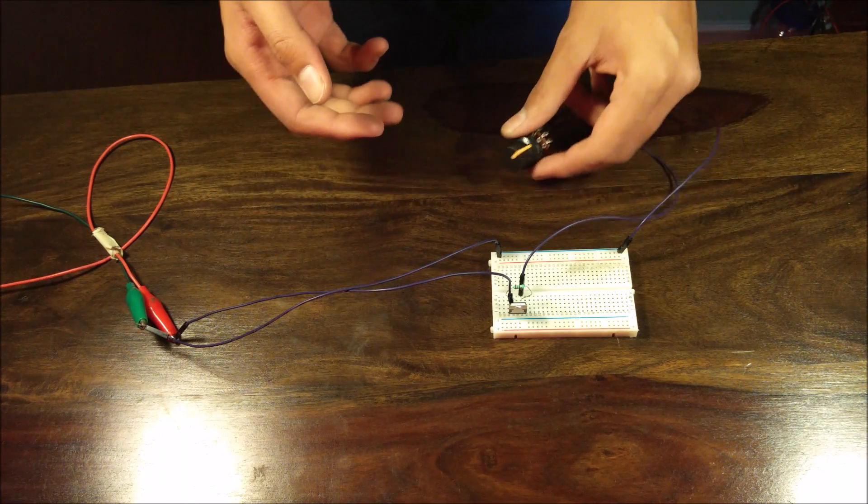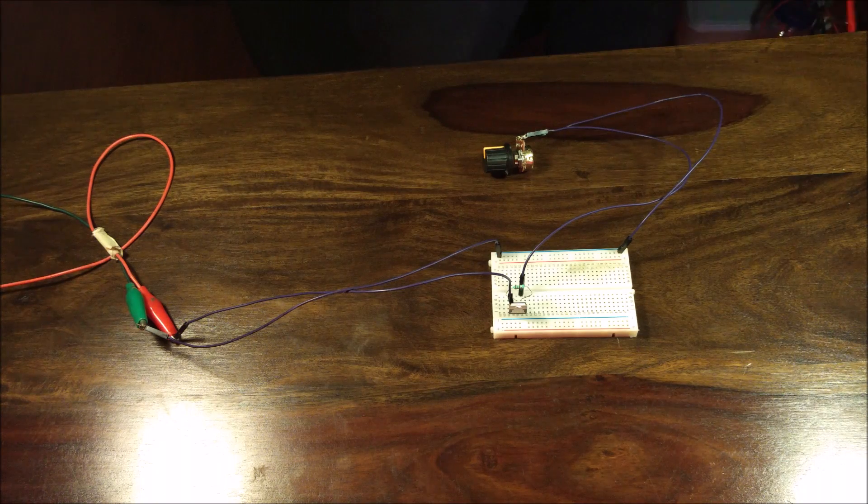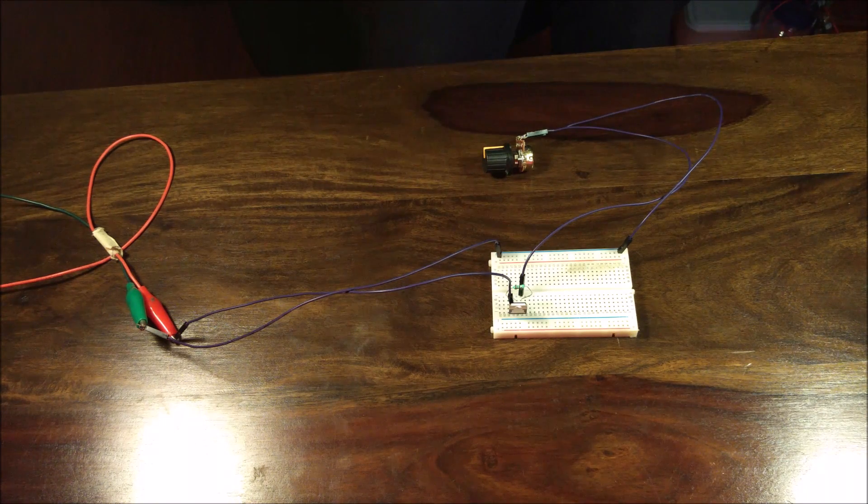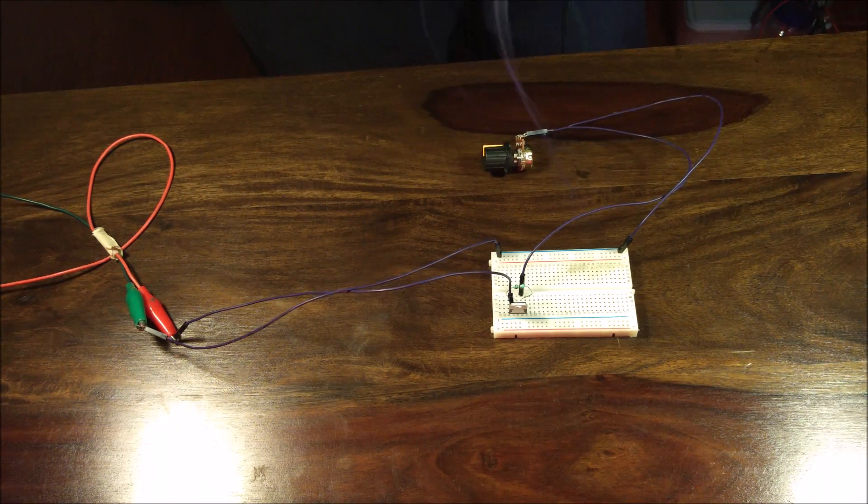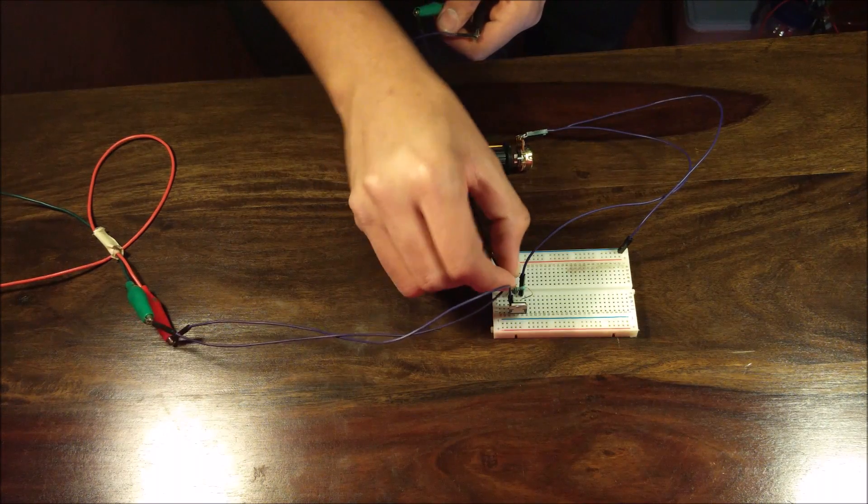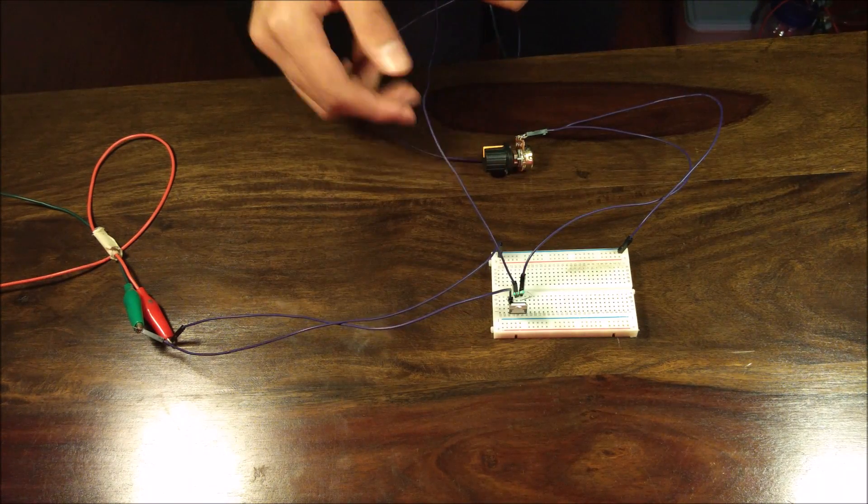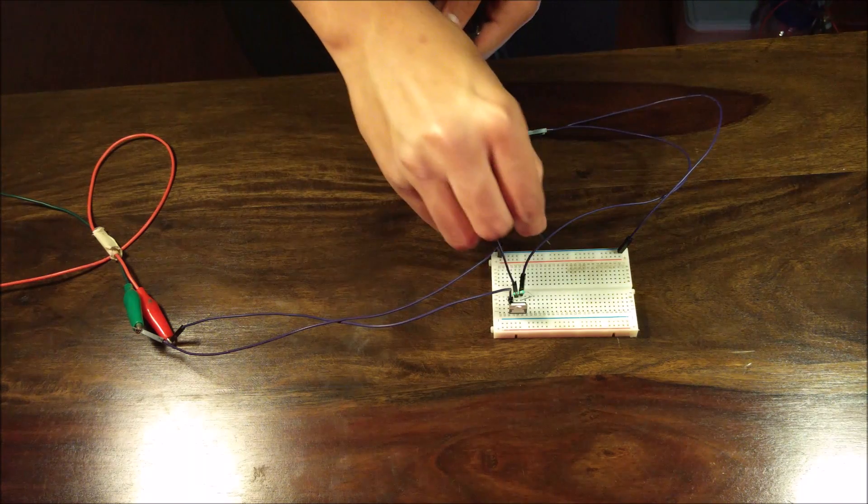And there you have it, the voltage regulator is done. Now to show you that this works I'll be using a multimeter here and I'll connect its positive terminal to the center pin or the output pin and its negative terminal to the ground of the whole circuit.